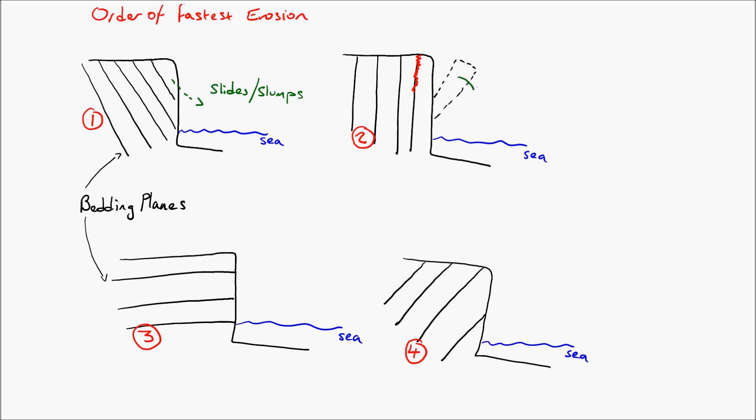In number two, the bedding planes are vertically downwards. This means that water can get between these bedding planes and can weaken them, and they will topple and fall into the sea.